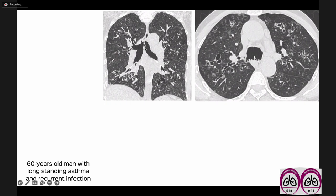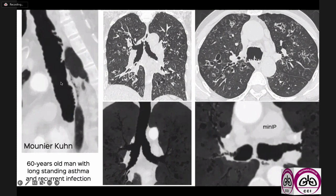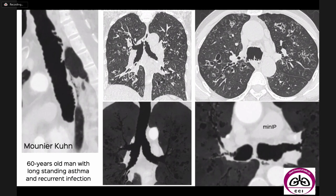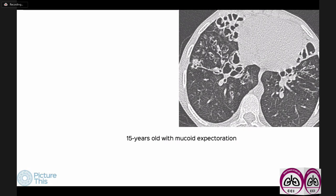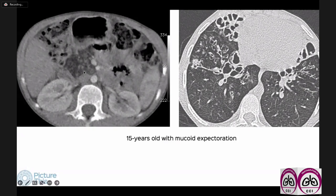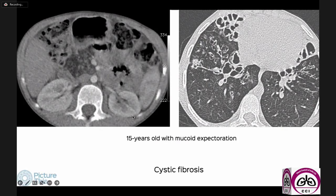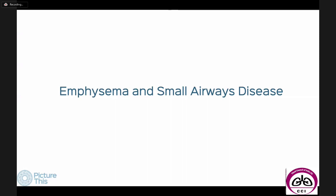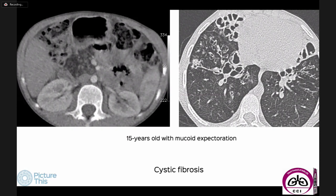Another etiology — a 60-year-old man with long-standing asthma and recurrent infections shows bronchiectasis along with striking diverticulae in the trachea and main bronchi on minimum intensity projection images. This is very typical of Mounier-Kuhn syndrome, which normally occurs in younger individuals but may be picked up later if undiagnosed. We also have a 15-year-old with bronchiectasis where the pancreas shows atrophy and fat infiltration — this combination is highly suggestive of cystic fibrosis.